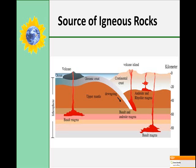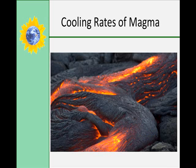Rocks can be melted through heating, depressurization, increasing the water content of the rock, or increasing the silica content of the rock. Cooling rates influence the texture of the igneous rock. If it has quick cooling, it has fine grains, like you see in obsidian. If it has slower cooling, you get coarser grains, like you see in basalt.